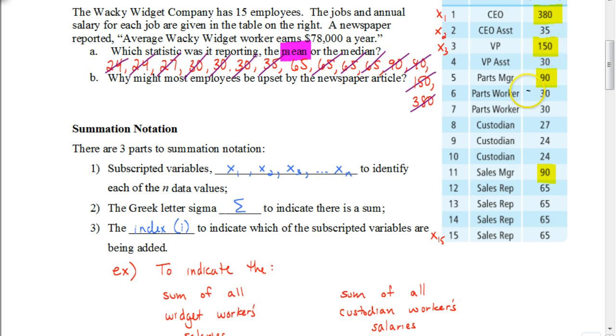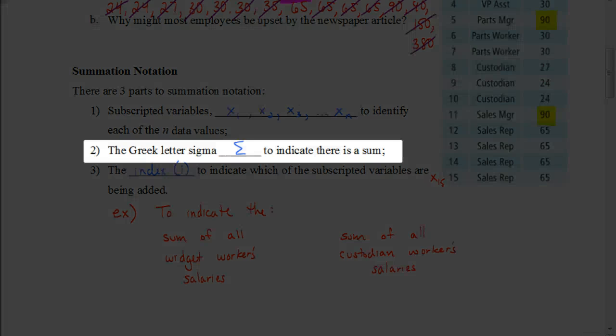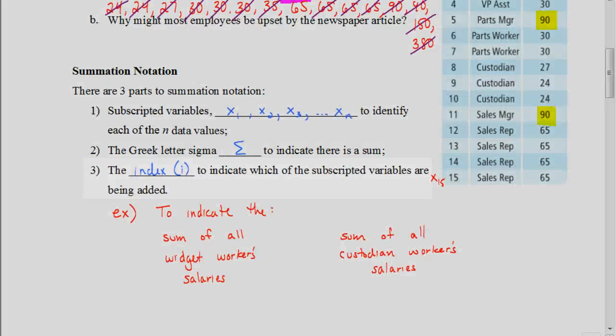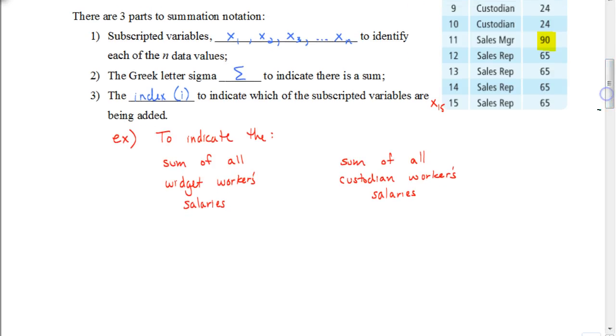So the third number in the set would be the $150,000. The 15th number in the set would be the $65,000. Now we use the Greek letter sigma to indicate that we're trying to find a sum, meaning we're adding up all those numbers in that set. The index i is used to indicate which of the subscripted variables are being added. So for example, if I wanted to indicate that I wanted to find the sum of all the widget workers' salaries, here's how I would write that. I would start out with my sigma notation, so my symbol sigma, and I want to identify the sum of all of the widget workers. So that would refer to my index. I would start with the first worker, and I would end with the 15th worker.